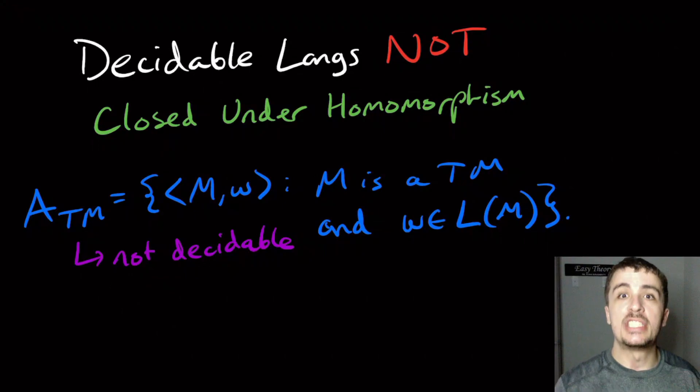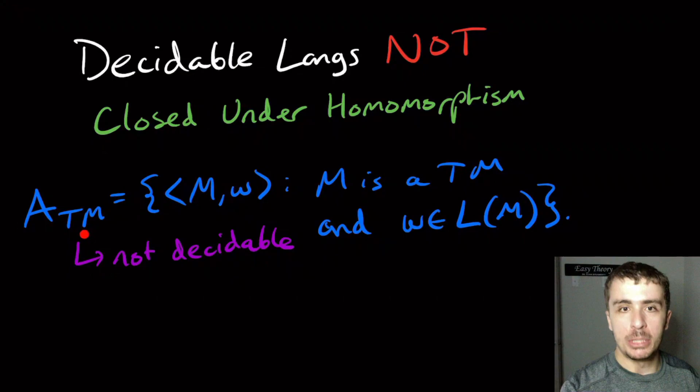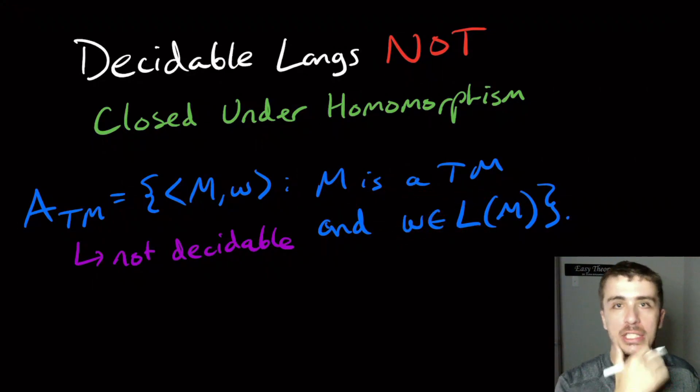Okay, so let's prove that decidable languages are not closed under homomorphism. So let's recall the language ATM. It doesn't have to be ATM. You can use any language that you want here. There's a suitable way to approach it. But we're going to use it this way. So this is the acceptance problem for Turing machines, and it's not decidable. So we're given a Turing machine and an input w here. And the ATM problem is asking whether or not this Turing machine accepts this input. And there's a classic proof to show that this is not decidable.